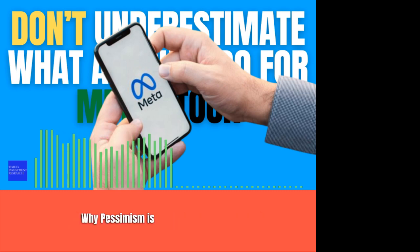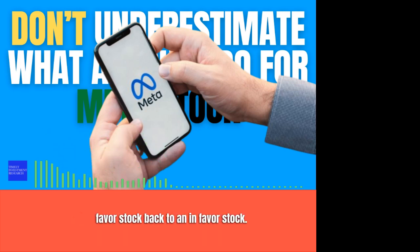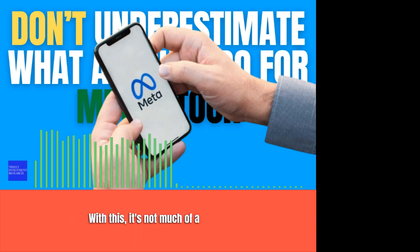Why pessimism is on the rise. In a brief span of time, Meta Platforms has gone from an out-of-favor stock back to an in-favor stock. With this, it's not much of a surprise that many argue a correction is on the way.